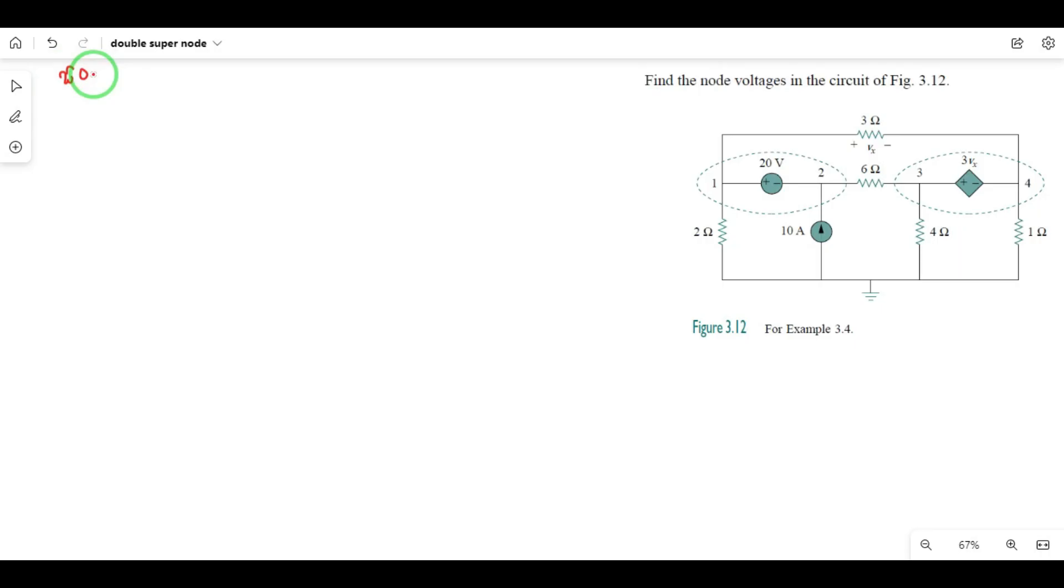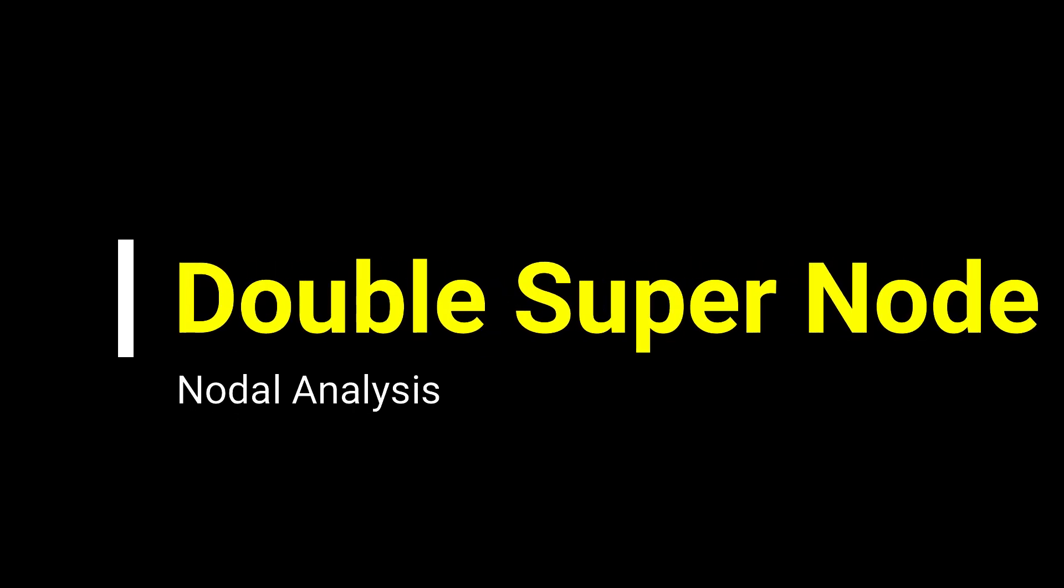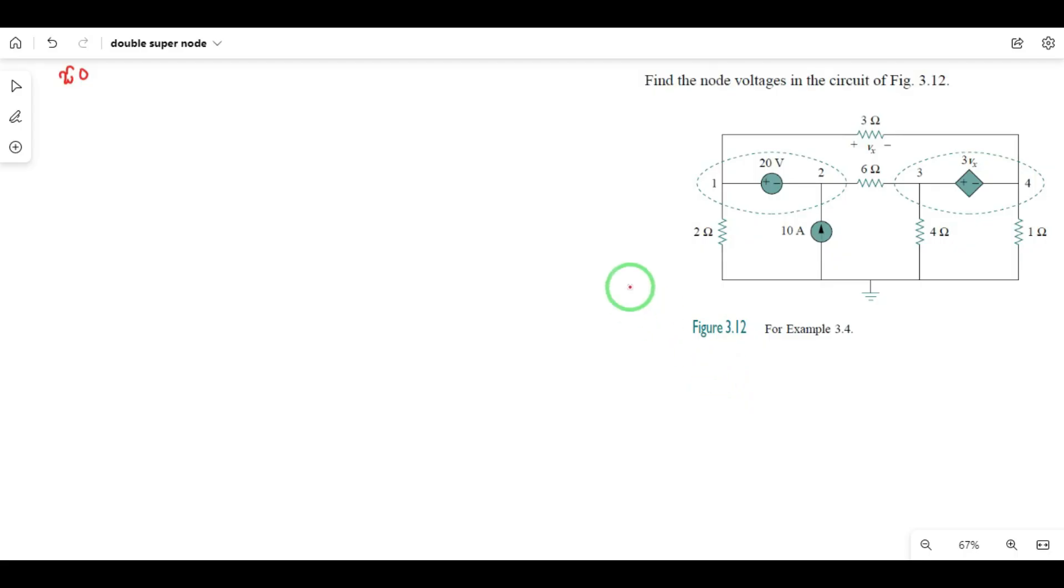Hi guys, in this circuit we have two super nodes, a double super node. The question is to find the node voltages. We already identified nodes 1, 2, 3, 4 and the reference node. We need to find the four node voltages, but here we have two super nodes in the circuit.